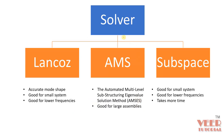In Abaqus, there are three types of solvers to perform modal analysis. The first solver is called the Lanczos solver, the second is the AMS solver, and the third is the subspace solver. Without going into the deep mathematics of each solver, the most preferred overall is the Lanczos solver.